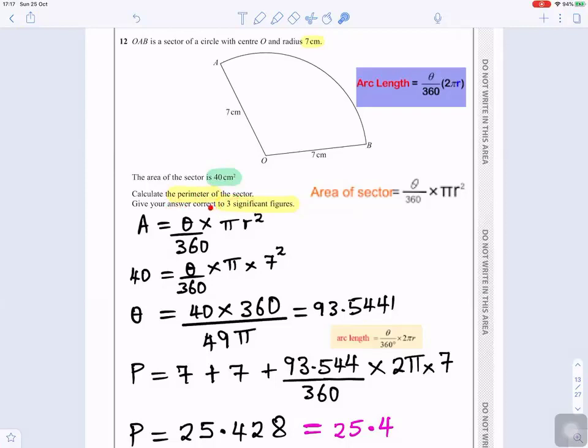Give your answer correct to three significant figures. So area of a sector is given by angle divided by 360 times pi radius squared. You need to learn this first formula. Area of a sector.